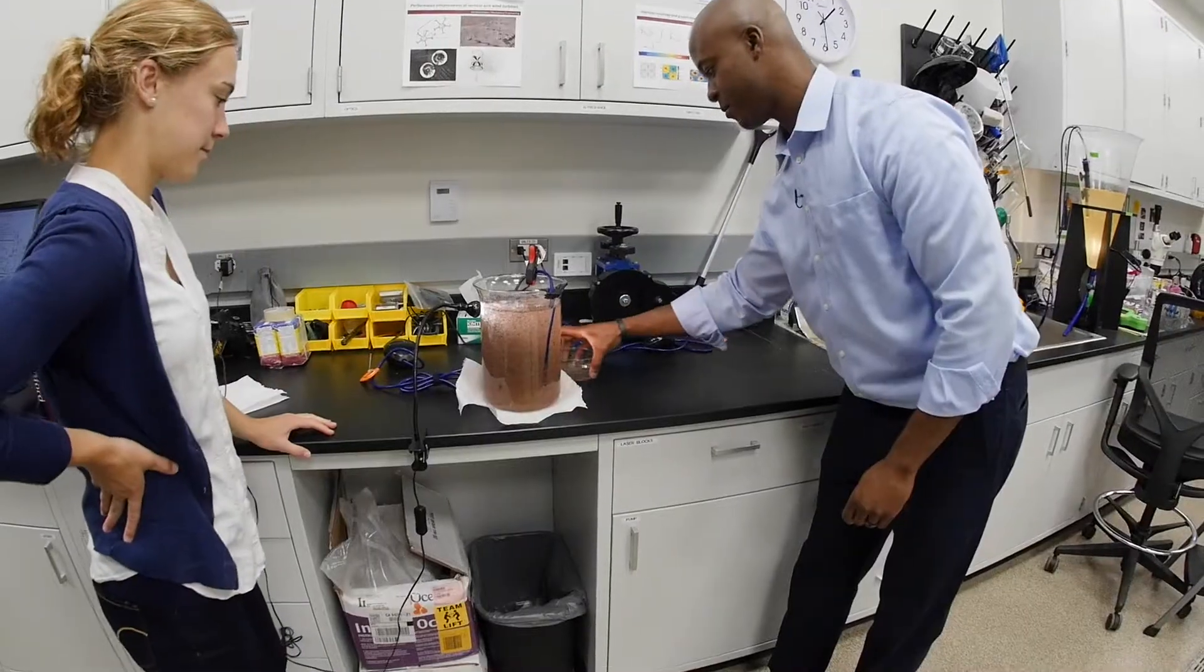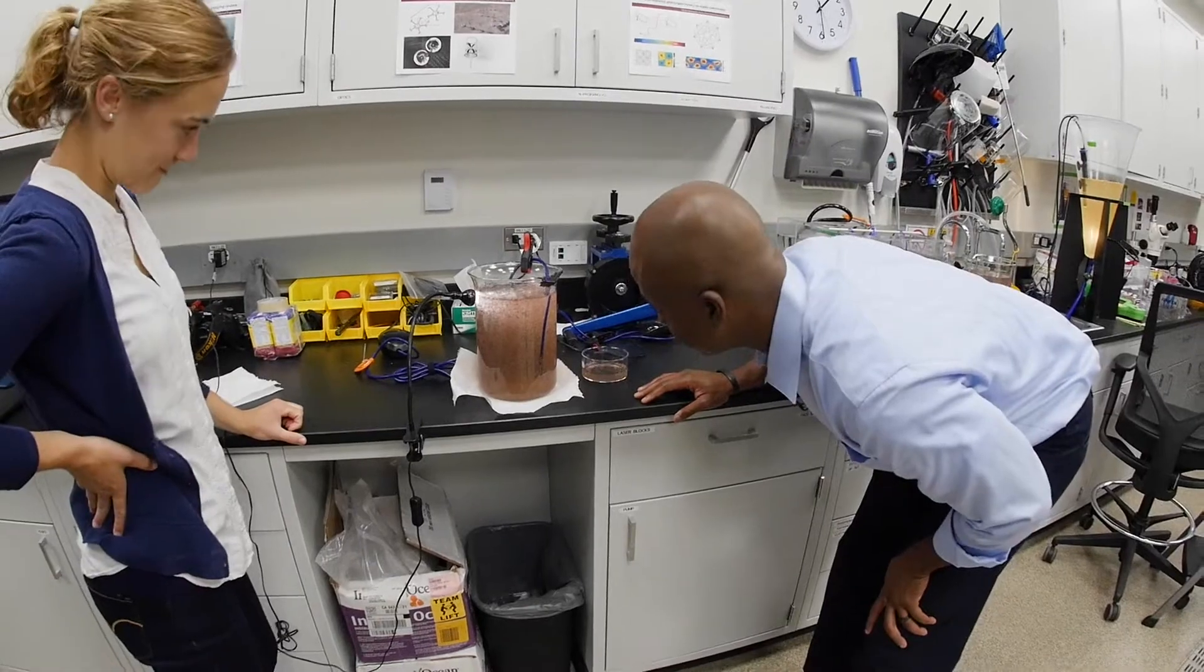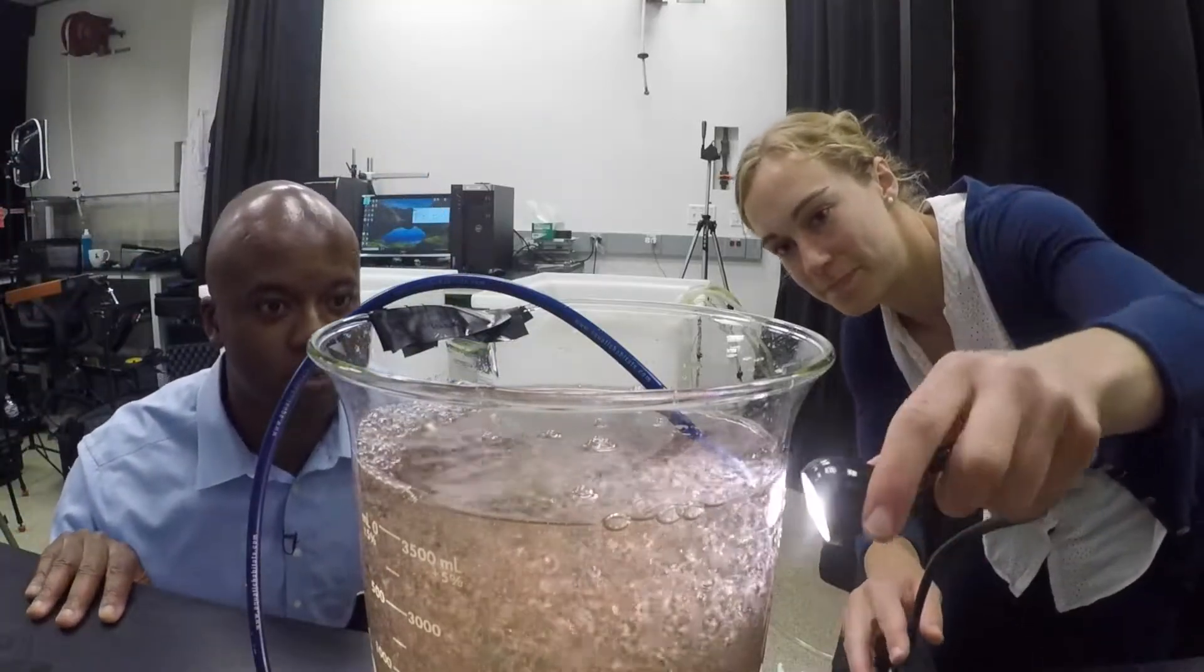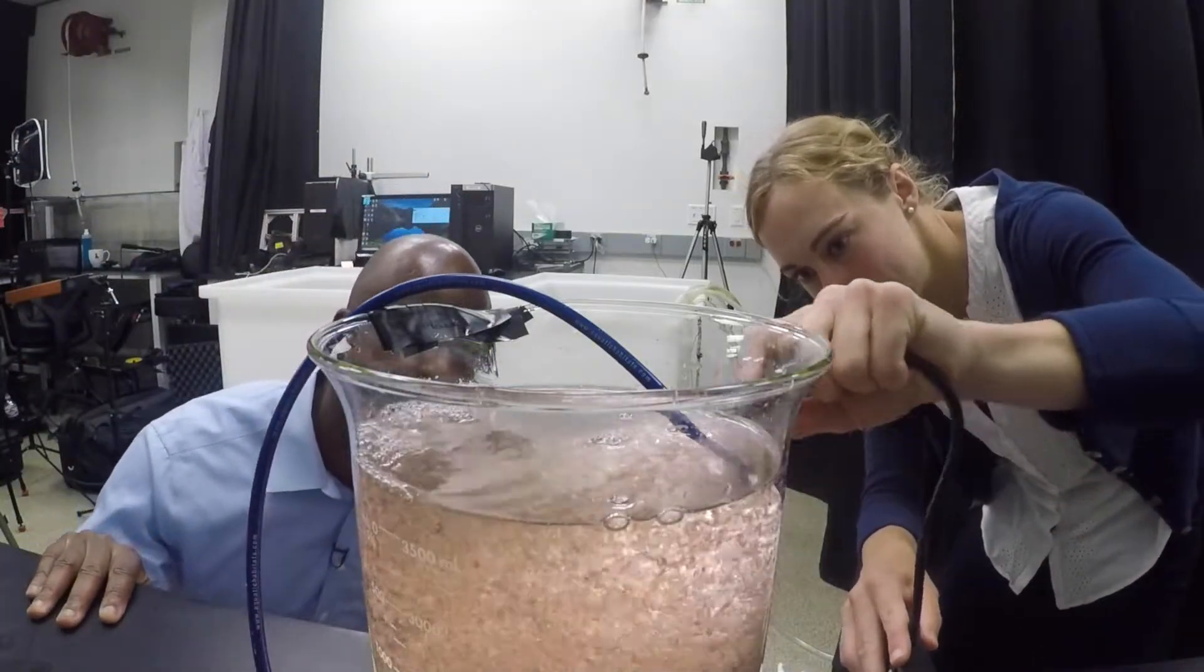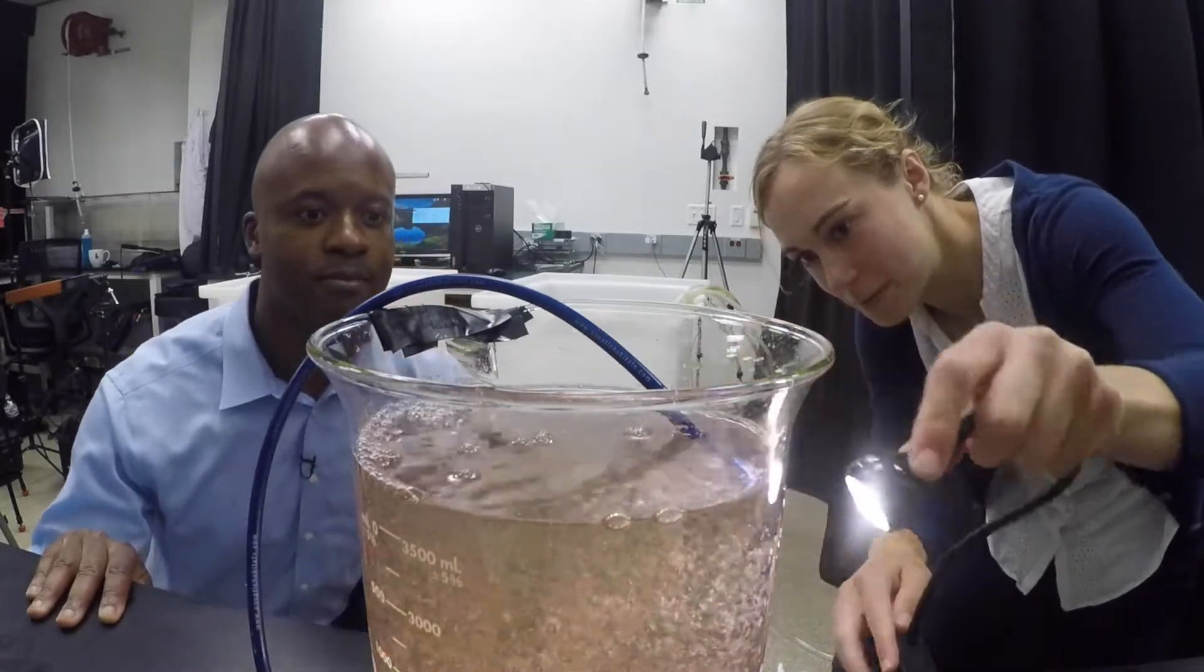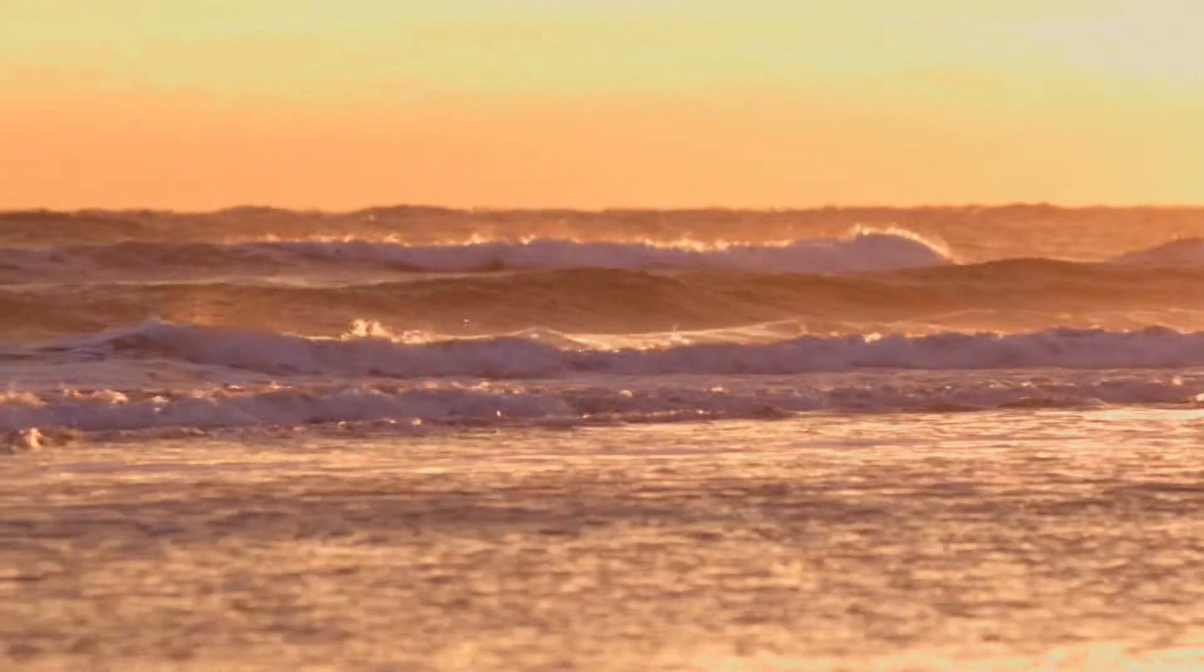With support from the National Science Foundation, engineers John Dabiri and Isabel Houghton want to better understand how vertical migrations of tiny marine animals like krill contribute to ocean mixing.